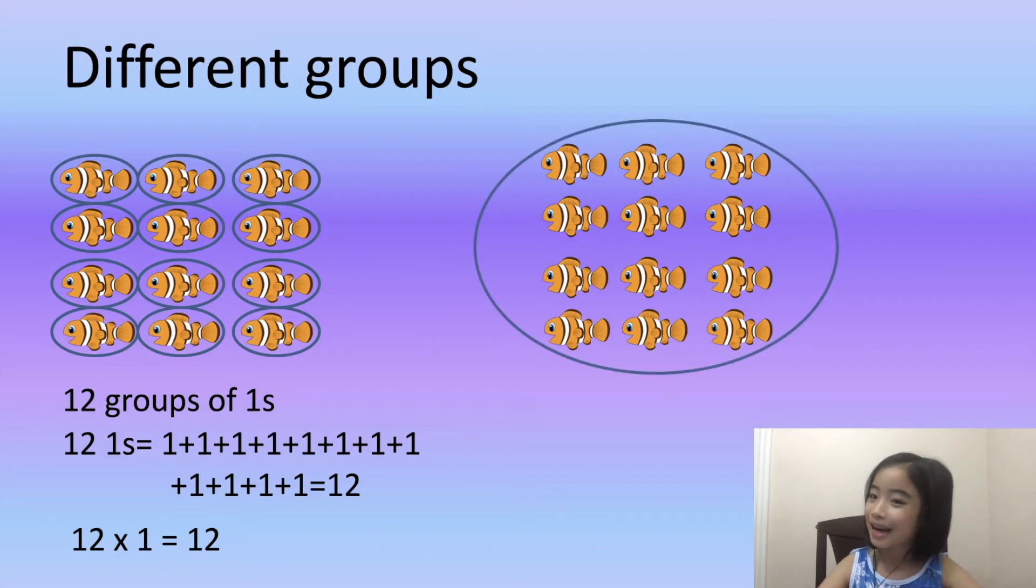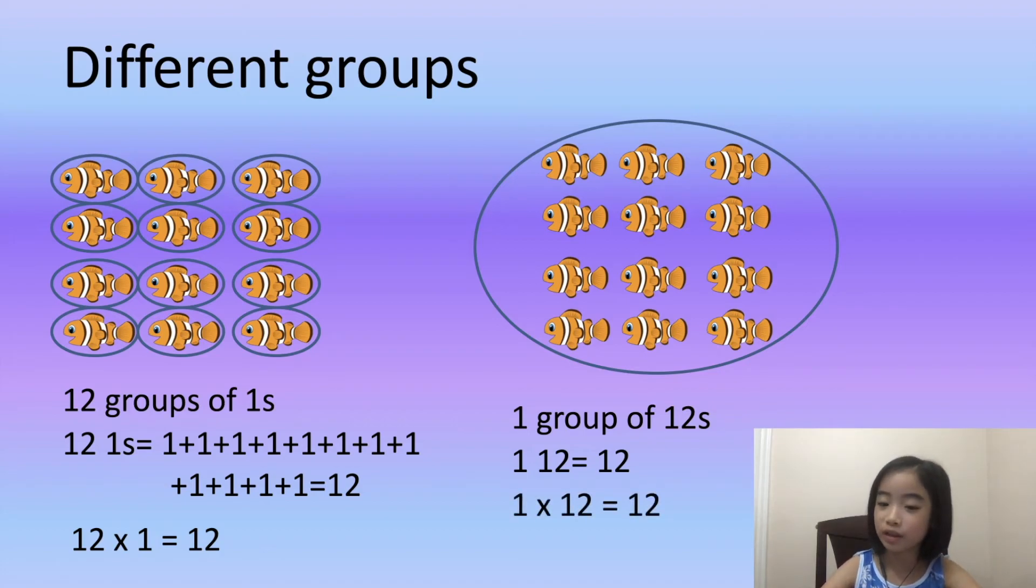And here, I have one group with twelve fishes. One twelve equals twelve. One times twelve equals twelve.